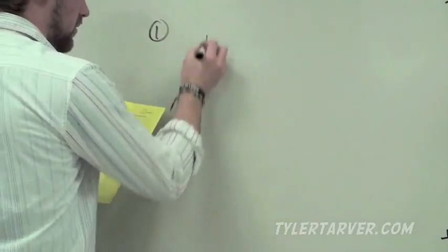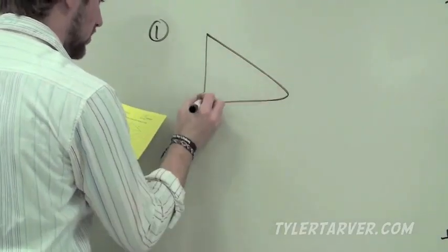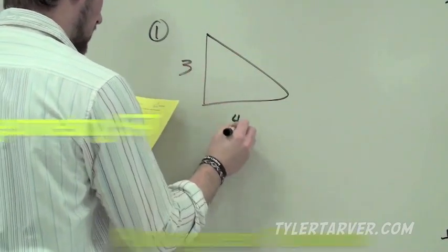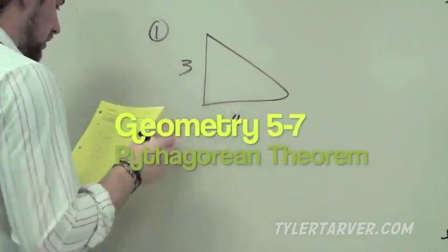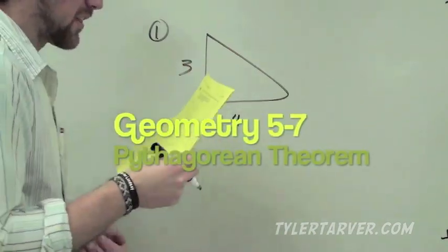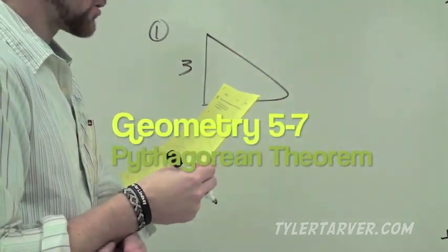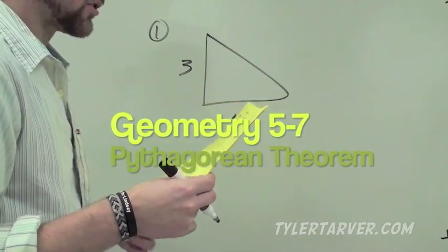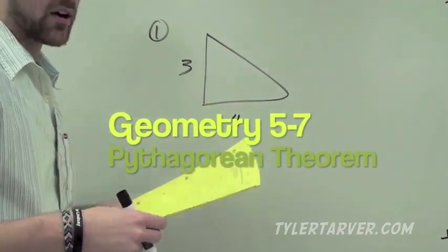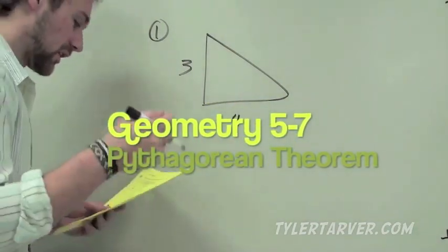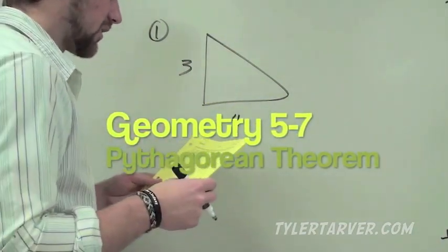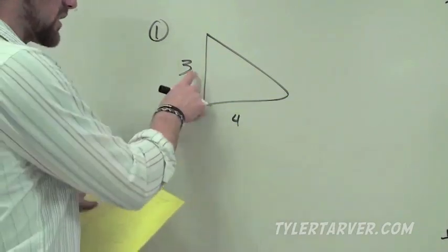It's just good stuff. a squared plus b squared equals c squared. The instructions say for 1 through 24, find the missing value for the given right triangle, and leave your answer in the simplest radical form. We'll get to that when we get there.